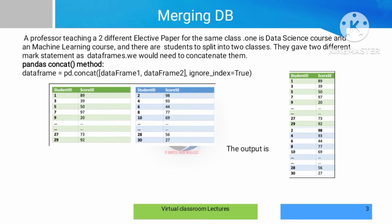There are two databases. For example, there is a class with elective papers. There are elective options — if you choose one class, there are elective papers, say elective 3, with four to five options. 50% of people choose data science and another 50% choose machine learning. So the same student has common subjects, but for elective 3 there are two subjects: machine learning and data science. That score comes from a separate exam with a different question paper, and the marks statement is separate.